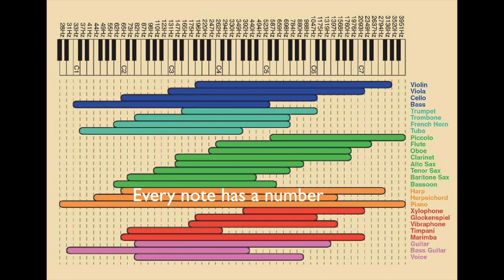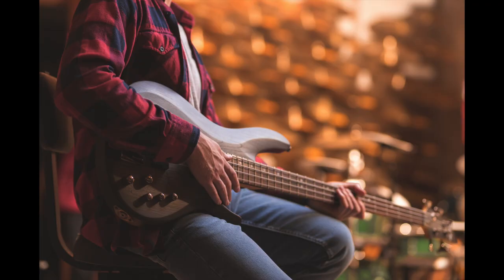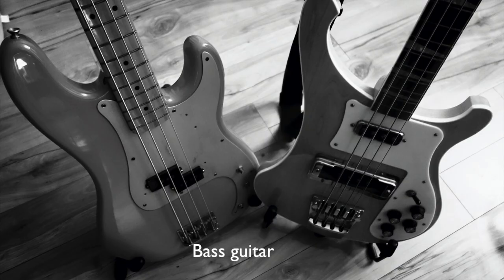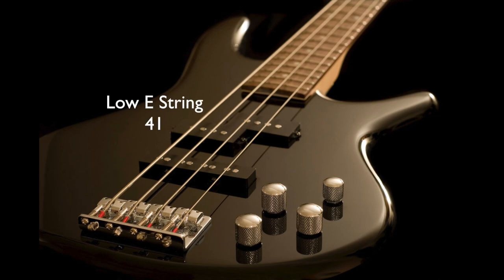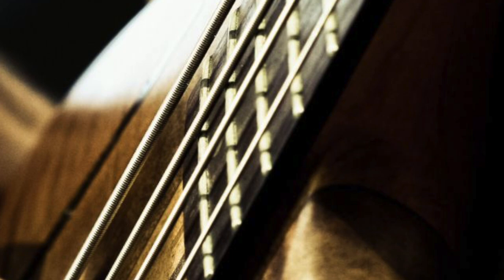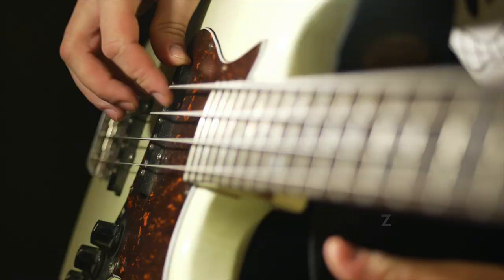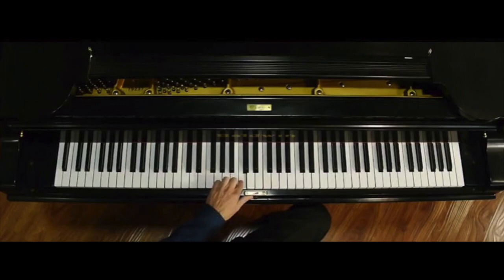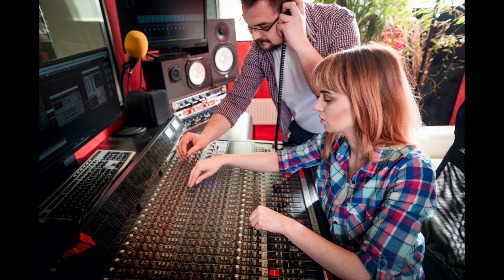Every note has a number that is different from every other note — low frequency notes have low numbers. For example, the lowest note on a bass guitar, the low E string, vibrates around 41 times a second, so its frequency number is 41. A short way of saying the frequency number is hertz — 41 hertz is the low E string's number. Middle C on a piano vibrates about 261 times a second, or 261 hertz. It's not important to remember that number, but later on as we learn more about music it helps.